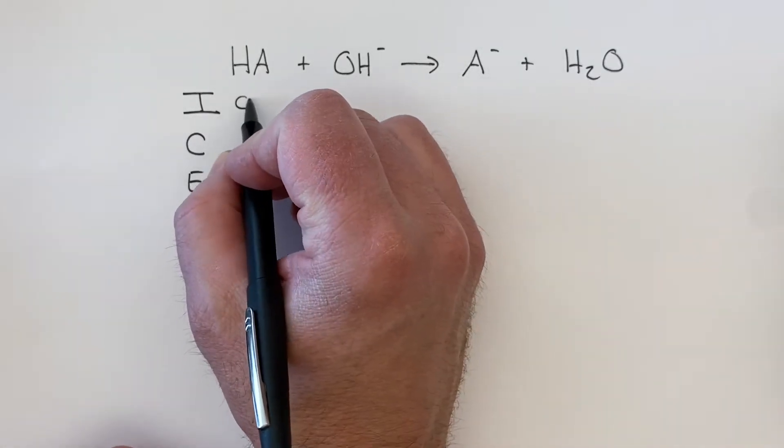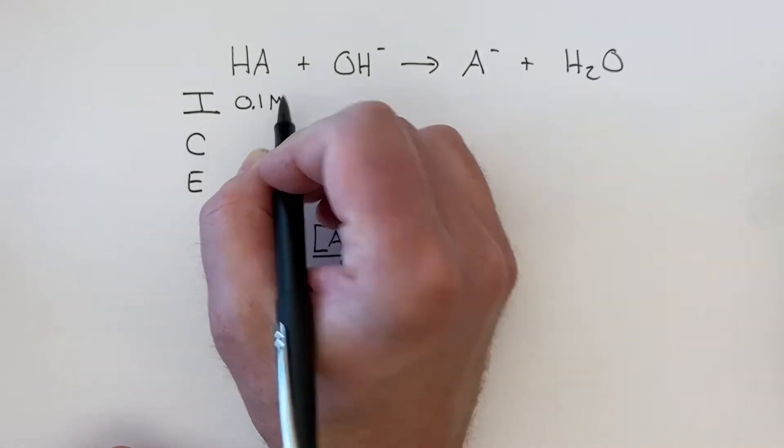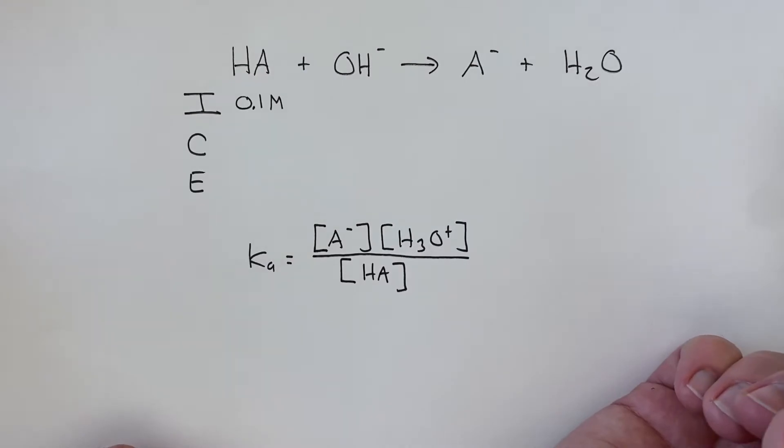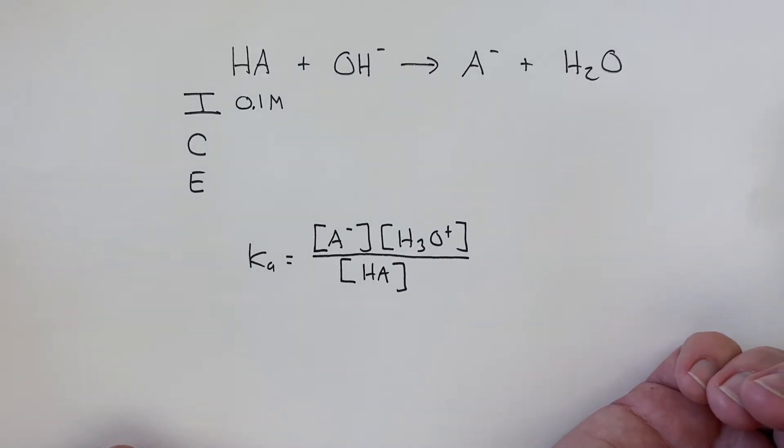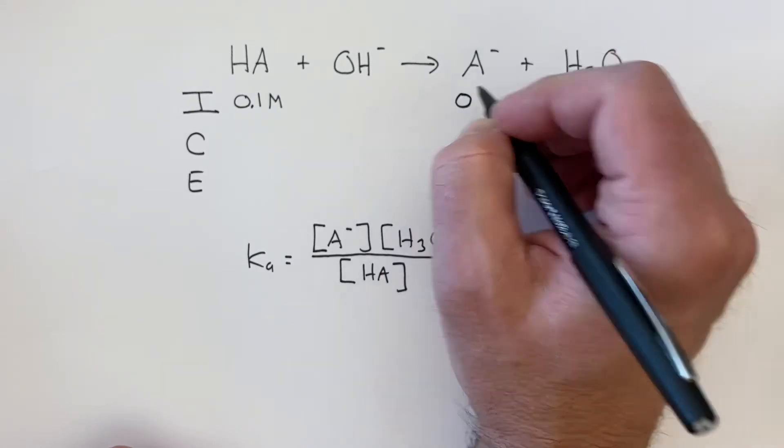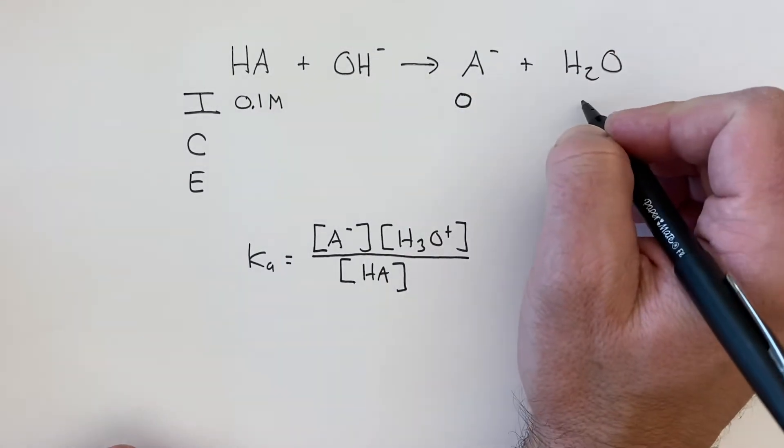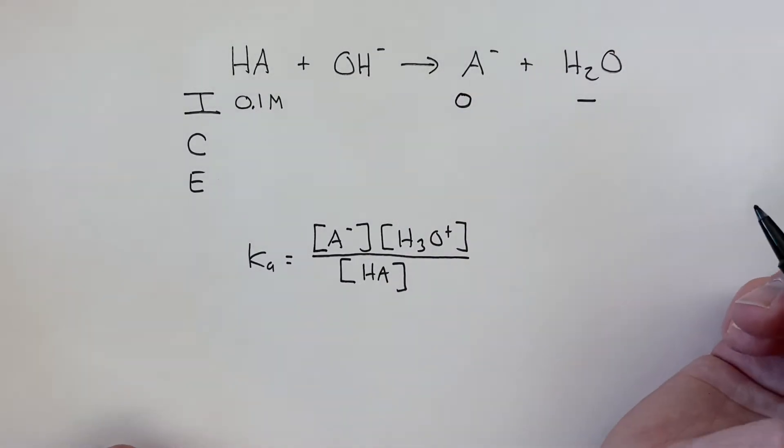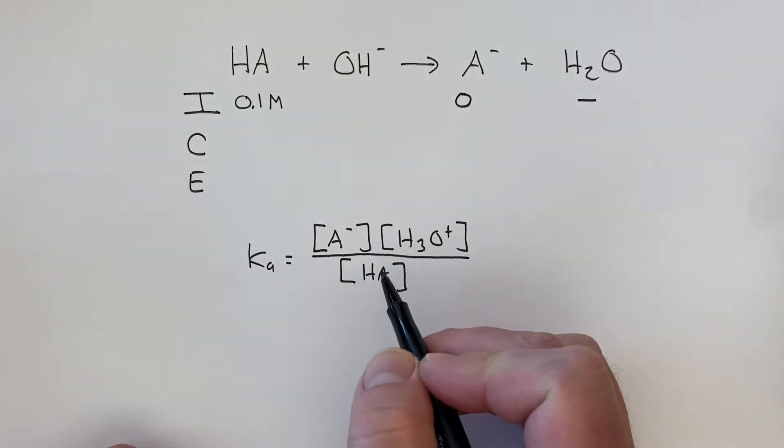And just to keep the numbers simple let's say for example our concentration of the weak acid is 0.1 moles per liter and we have zero of this, and we have some water molecules in the solution but we're not going to worry about those because they don't show up in our equilibrium expression.